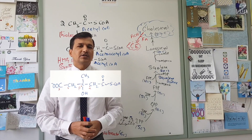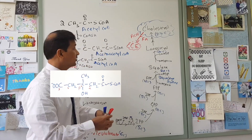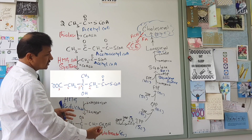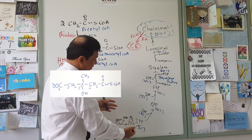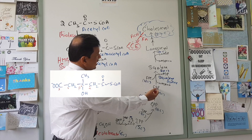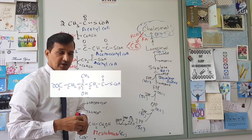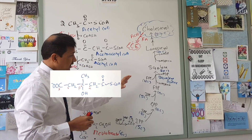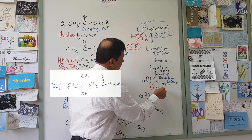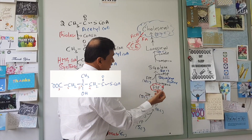Now let me explain the fates of farnesyl pyrophosphate (FPP) during cholesterol biosynthesis. As we've seen, acetyl-CoA molecules condense to form mevalonate, which forms isopentenyl pyrophosphate, then geranyl pyrophosphate, then farnesyl pyrophosphate — which feeds into cholesterol biosynthesis. But farnesyl pyrophosphate also has other important fates.